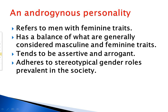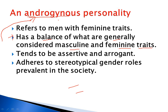Question 10: An androgynous personality refers to a personality that has both masculine and feminine qualities in a balanced way. The correct option states it 'has a balance of what are generally considered masculine and feminine traits.' If a child has both these traits in a balanced way, that will be called an androgynous personality.